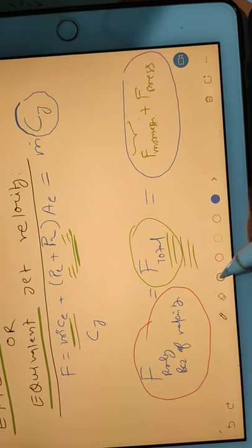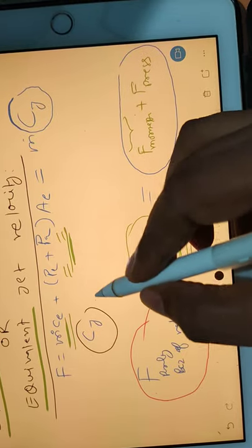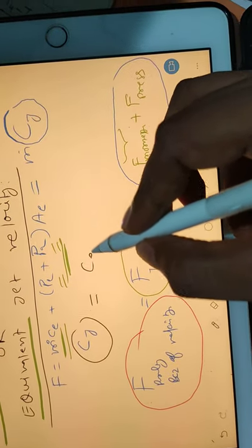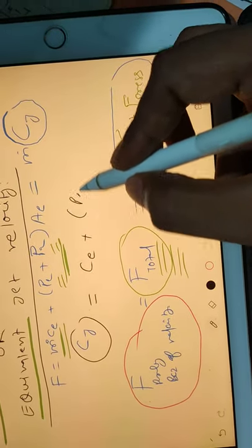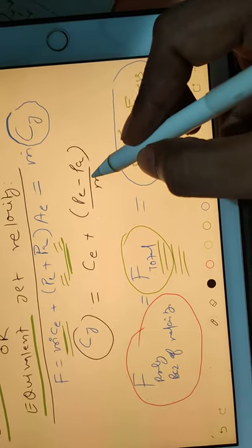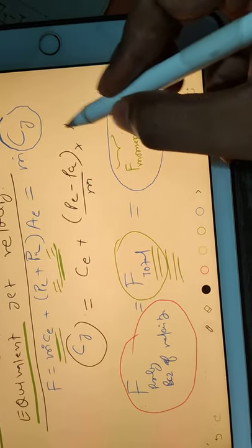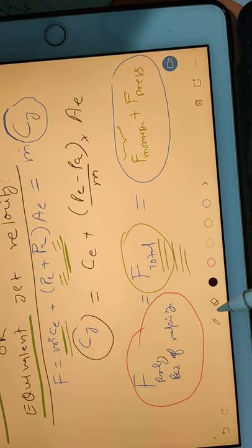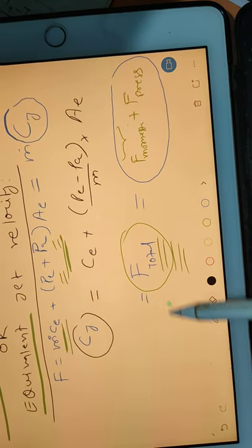So we can find out cj. cj will look like cj is equal to ce plus pe minus pa divided by m dot times this exit area. Here one thing what we have to make note.